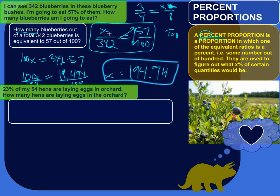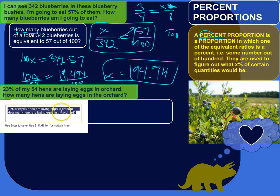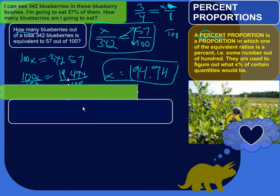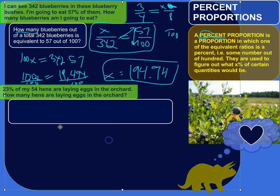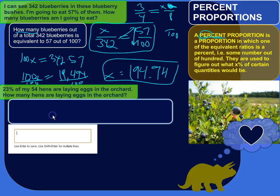All right, let's try another one. 23% of my 54 hens are laying eggs in the orchard. How many hens are laying eggs in the orchard? So let's rephrase this as more precise, so we can say,